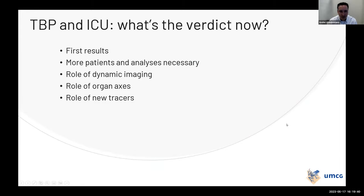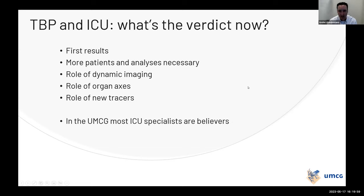So what's the verdict? These are our first results. We now scan one or two ICU patients per week — going from 30 in 10 years to potentially 1,500 per year. We need more patients and more analysis, and need to determine the role of dynamic imaging and organ access. But at UMCG, most ICU specialists are now believers. We think that scanning ICU patients on the total body PET system is really a perfect match.